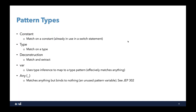The last pattern type we're going to talk about is the any pattern type, where we could use an underscore. That's similar to var in that we match against anything, but we bind to nothing. This is similar to some of the ideas from JEP 302. There is also a method pattern type, but because we don't have any examples of that in this presentation, I'm not going to talk about it specifically.